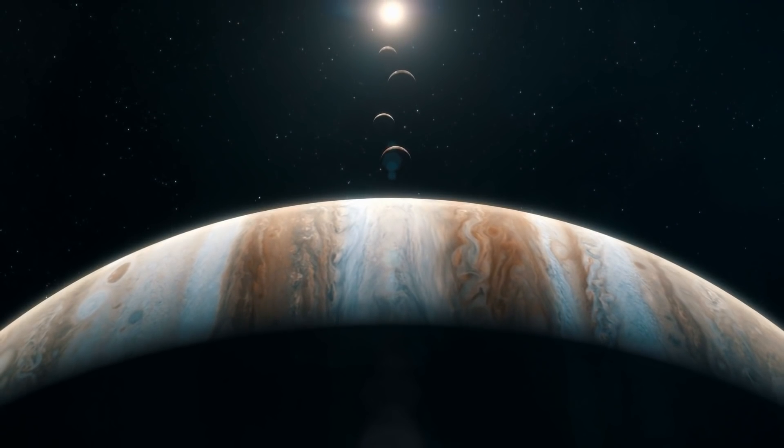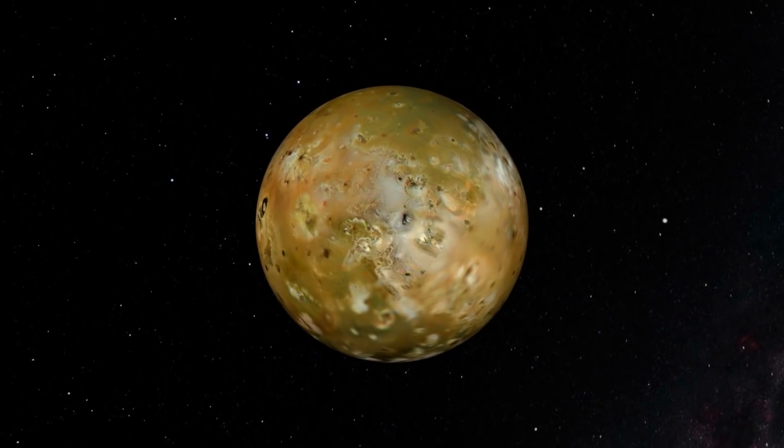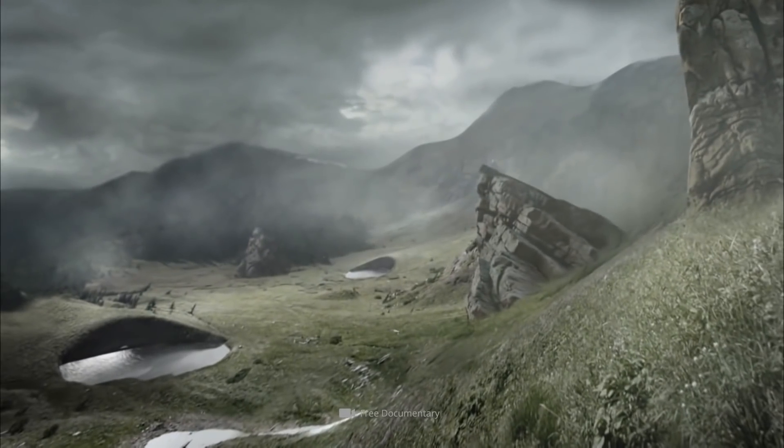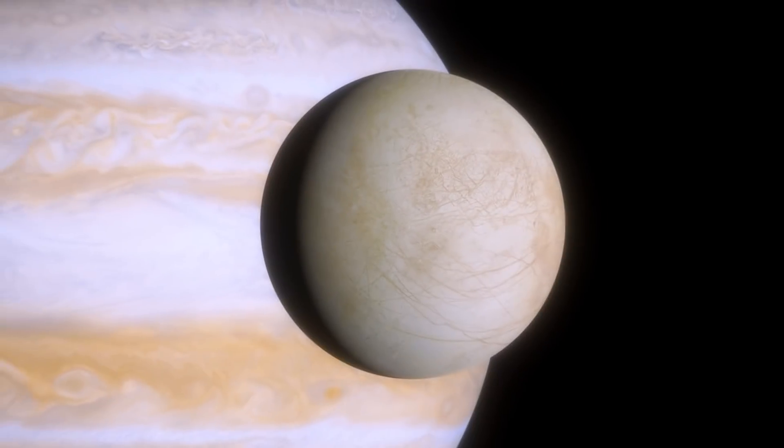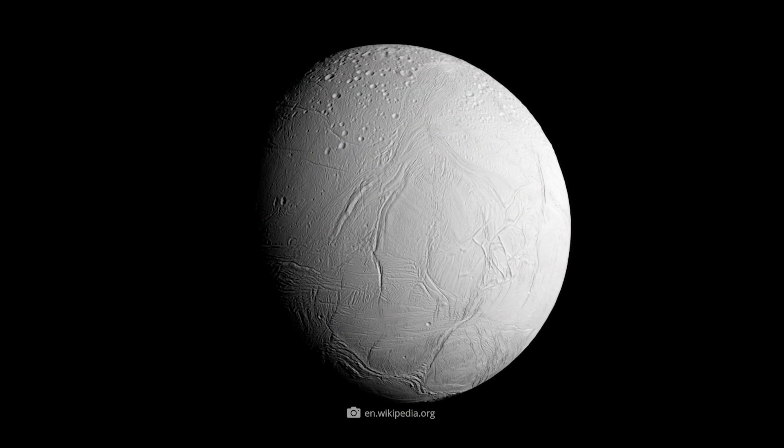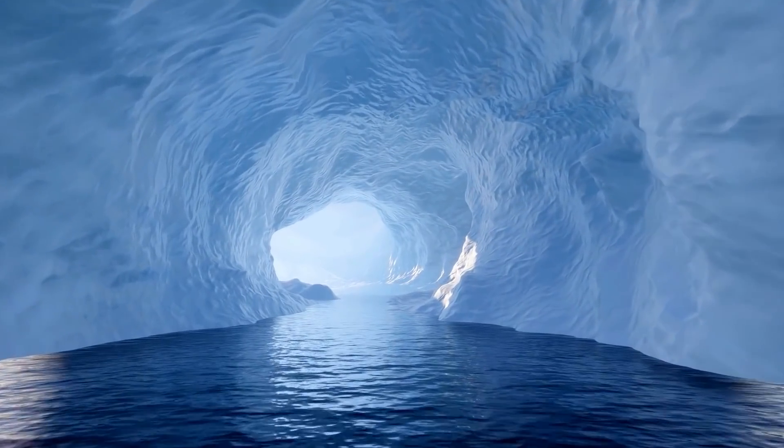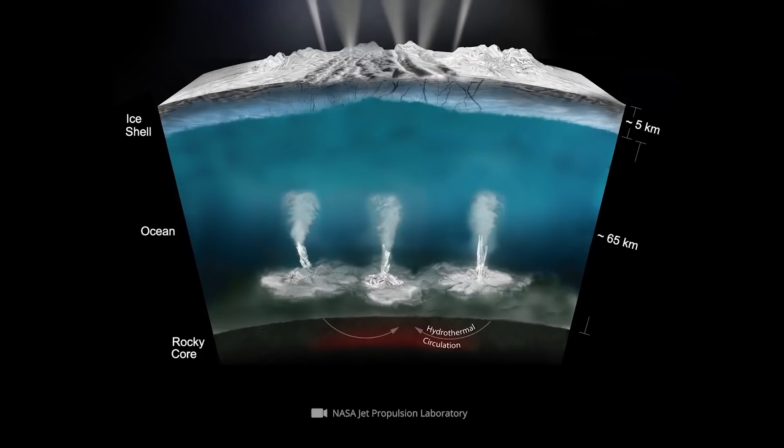And indeed, some of these exciting satellites repeatedly move into the center of attention when it comes to the question of potentially habitable worlds. Accordingly, it's now considered certain that Jupiter's moon Europa and Saturn's satellite Enceladus hide gigantic oceans beneath their icy surfaces.